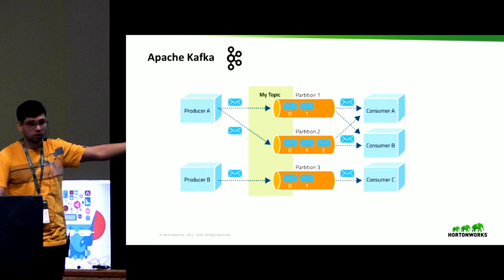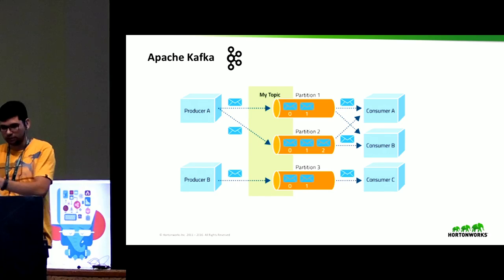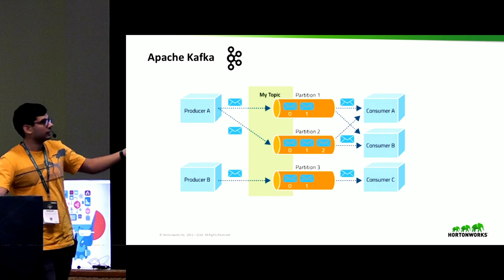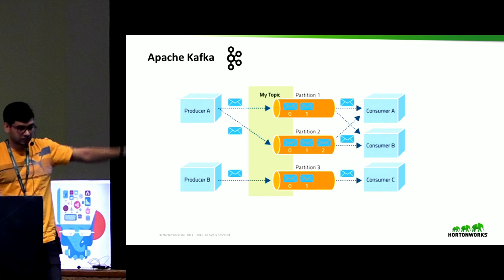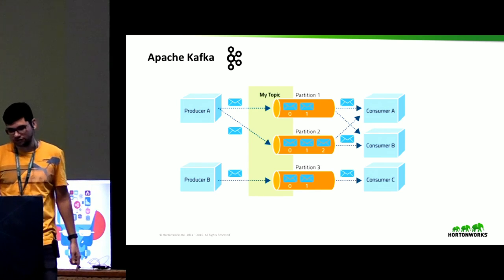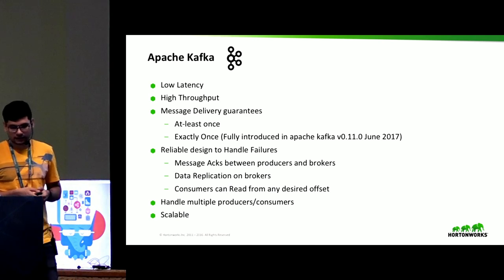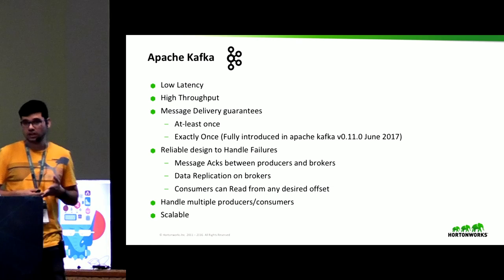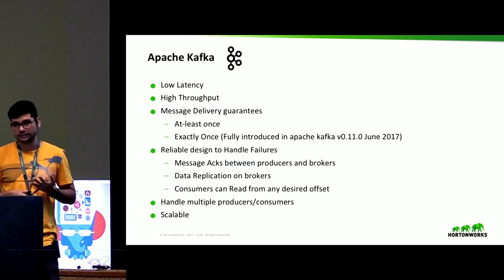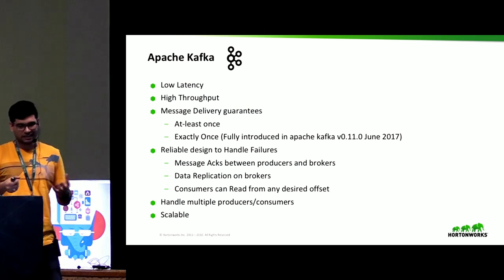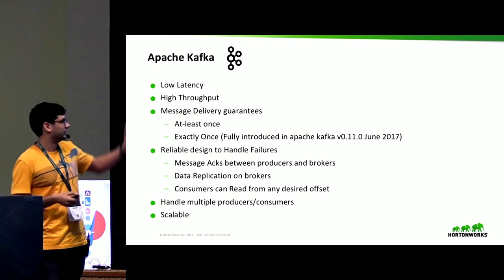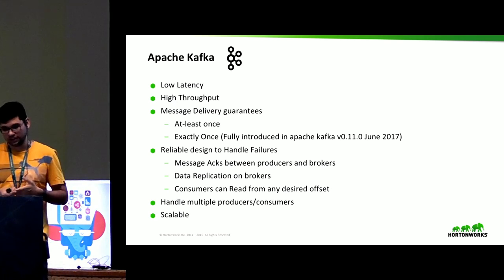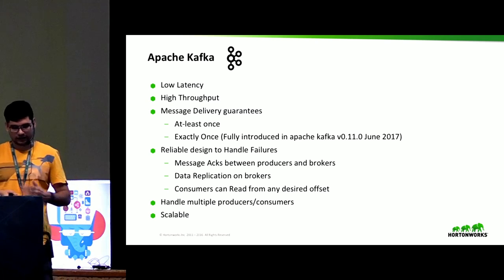There can be multiple consumer groups to consume events. Each consumer also tracks its own offset so that if there is a failure on the consumer end, it can come back and start reading messages from the last known good offset. To summarize, Apache Kafka provides low latency and high throughput. It has message delivery guarantees of at least once. The Kafka team also introduced exactly once guarantees in their latest release. It has a reliable design to handle failures with message acknowledgements between producers and brokers, configurable data replication on brokers, and consumers can read from any desired offset and track their own offsets.